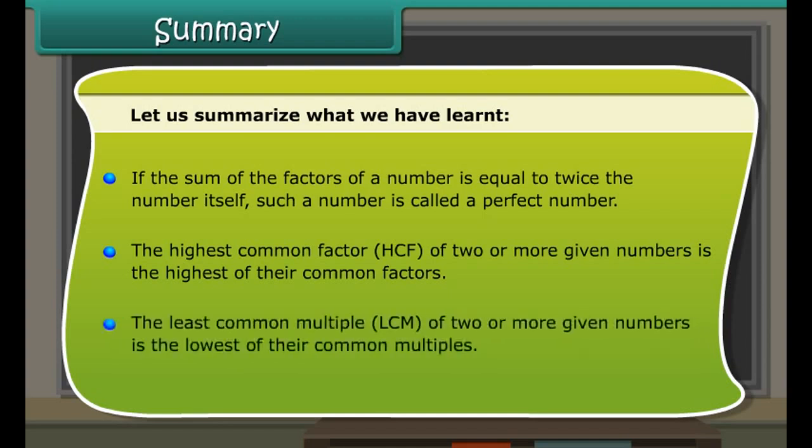Summary: A factor of a number is an exact divisor of that number. The largest factor of a number is the number itself. Every factor is less than or equal to the number. The smallest multiple of a number is the number itself, and every multiple is greater than or equal to that number. If two numbers have only 1 as a common factor, they are co-prime numbers. If the sum of factors equals twice the number, it is a perfect number. The HCF of two or more numbers is the highest of their common factors. The LCM is the lowest of their common multiples.